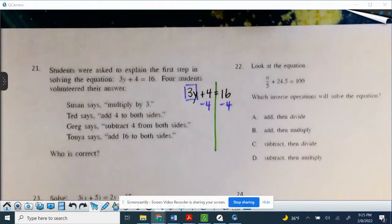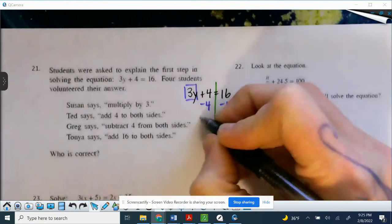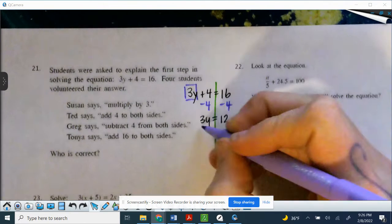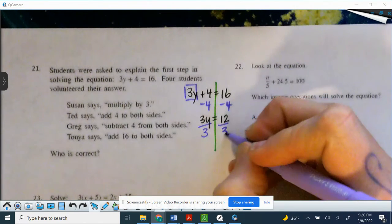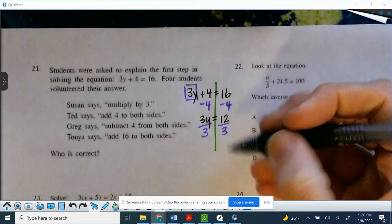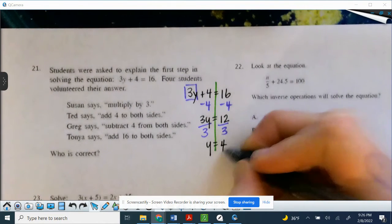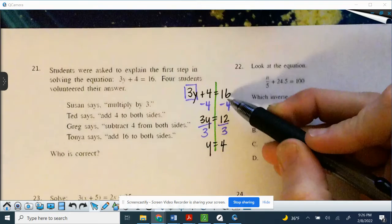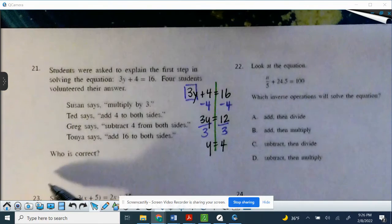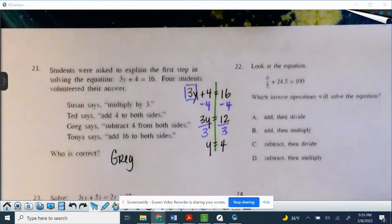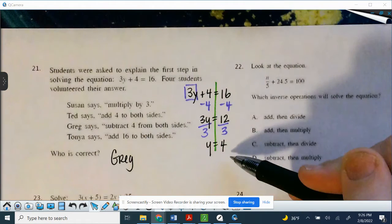Boom, there it is. But we're going to go ahead and finish because practice makes perfect. More practice is better. So 3y divide by 3, because the inverse of multiplication is division, so y equals 4. So our first step was to subtract. So who is correct? Greg is correct. And then if you were asked to continue to solve, you would just continue to solve.